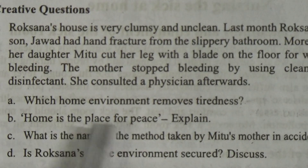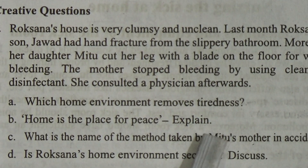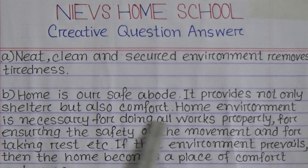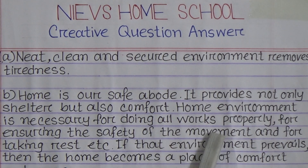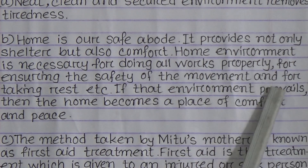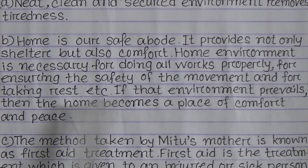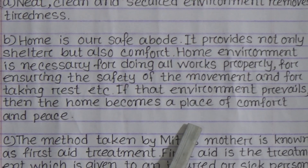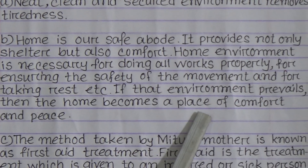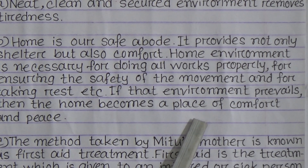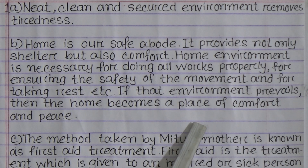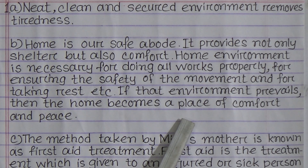Question B: Home is the place for peace — explain. Home is our safe abode. It provides not only shelter but also comfort. A proper home environment is necessary for doing all works properly, ensuring safety of movement, and taking rest. If that environment is maintained well, the home becomes a place of comfort and peace. We have to keep our furniture and necessary elements in safe, well-arranged places so that every family member can be comfortable and at peace.